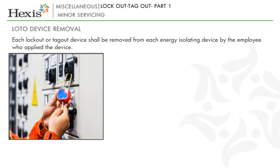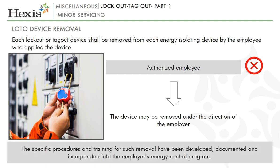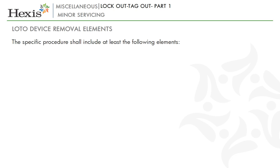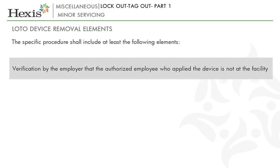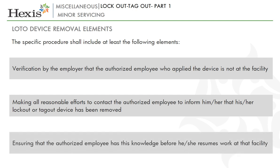Each lock-out or tag-out device shall be removed from each energy isolating device by the employee who applied the device. When the authorized employee who applied the lock-out or tag-out device is not available to remove it, that device may be removed under the direction of the employer, provided that specific procedures and training for such removal have been developed, documented and incorporated into the employer's energy control program. The employer shall demonstrate that the specific procedure provides equivalent safety to the removal of the device by the authorized employee who applied it. The specific procedure shall include: verification by the employer that the authorized employee who applied the device is not at the facility; making all reasonable efforts to contact the authorized employee to inform him or her that their lock-out or tag-out device has been removed; and ensuring that the authorized employee has this knowledge before he or she resumes work at that facility.